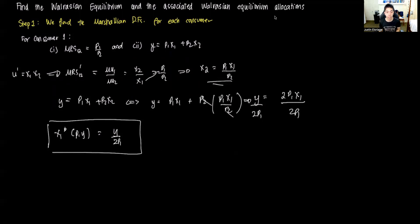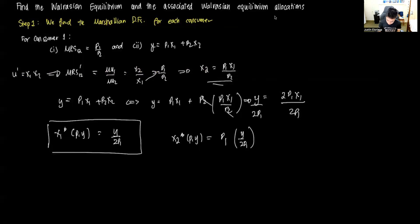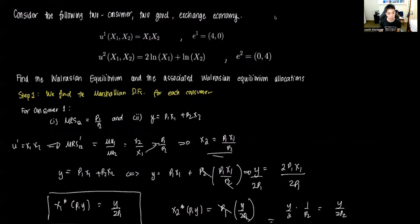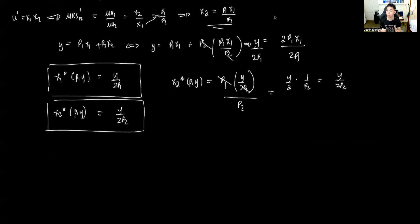To find x2* for consumer one, we plug the value of x1* back into the intermediate form x2 = P1·x1 / P2. Substituting x1* = y/(2P1), we get P1 times y/(2P1) divided by P2. The P1 cancels, giving y/(2P2). So x2*(P,y) = y / (2P2). We now have the Marshallian demand functions for consumer one.